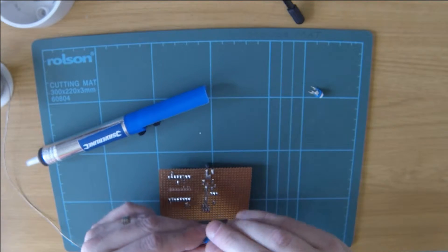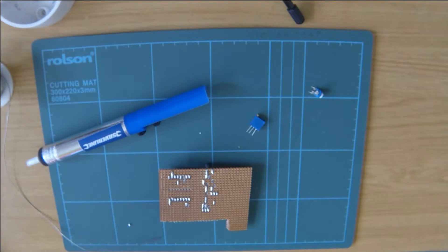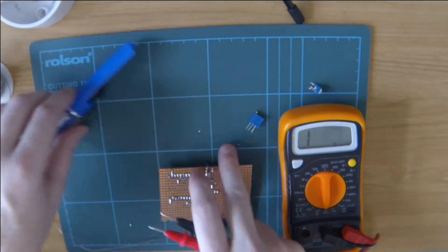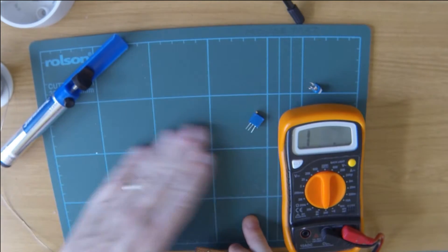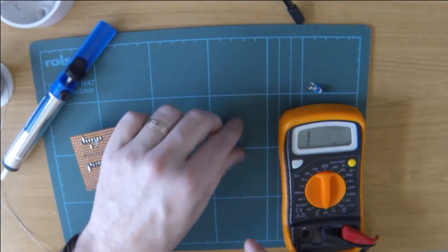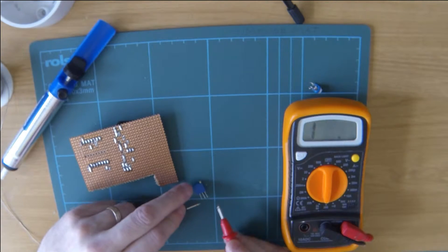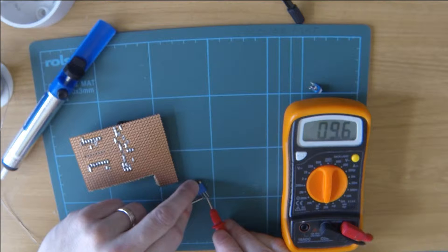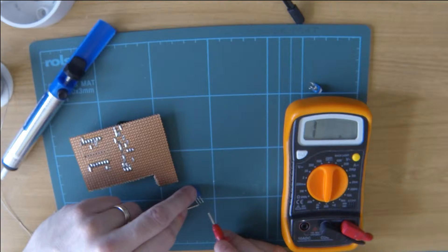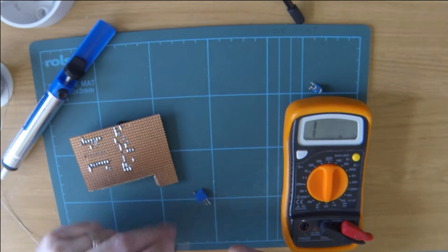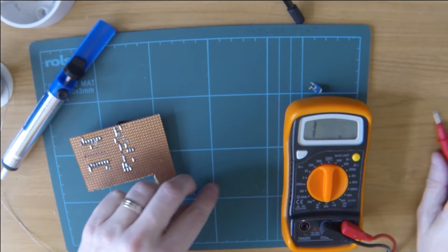And then test this again. It needs to be 18 ohms. So as long as it's close to that at the start, should be able to get it dialed in quite close. Let's see what this side says. Yeah that was 20, 23. So that will do.